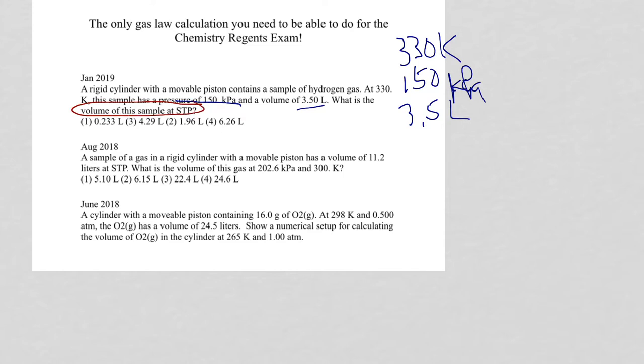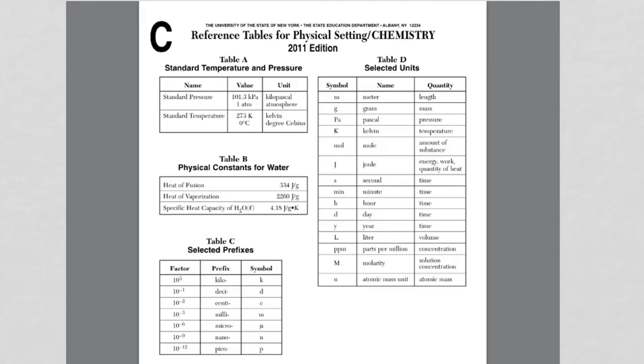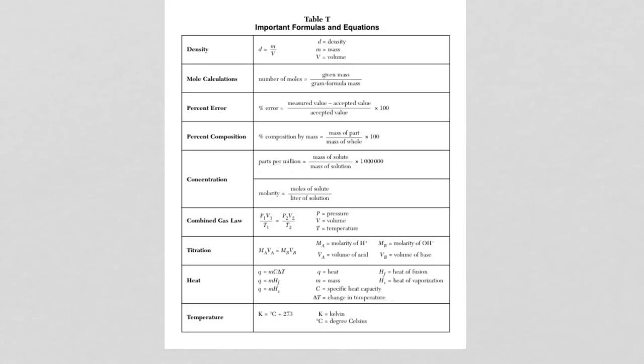You got temperature, pressure, and volume. You're given temperature and pressure with the letters STP. Standard temperature and pressure are right on reference table A. When it comes to pressure and volume with the combined gas law, they must be consistent on both sides of the equal sign.